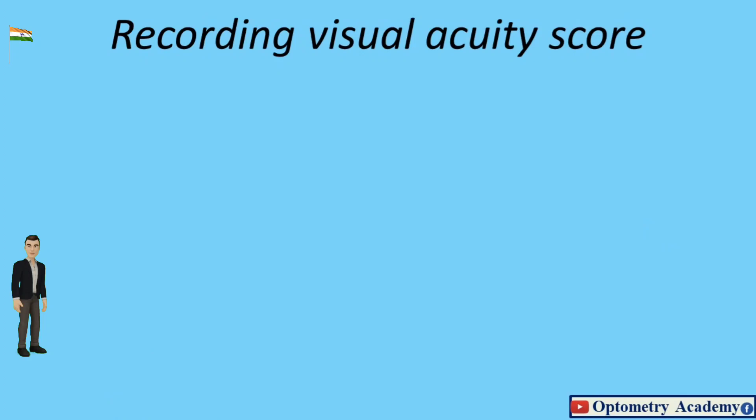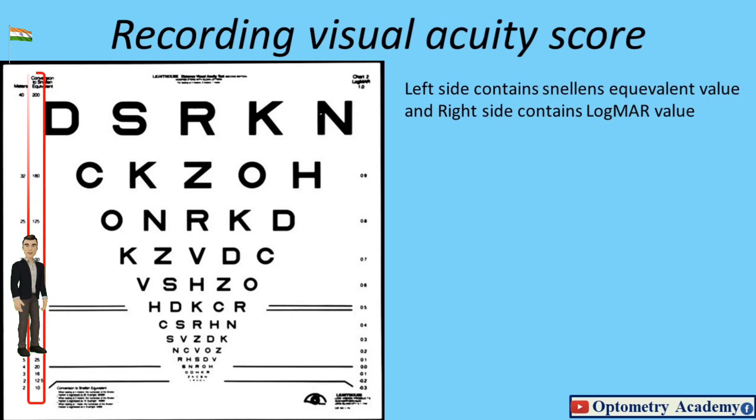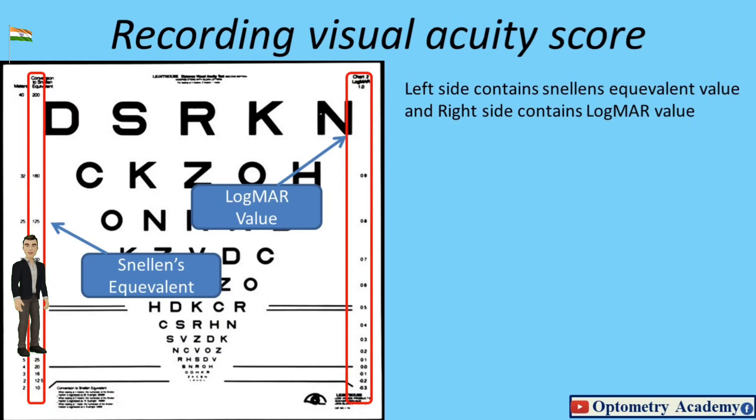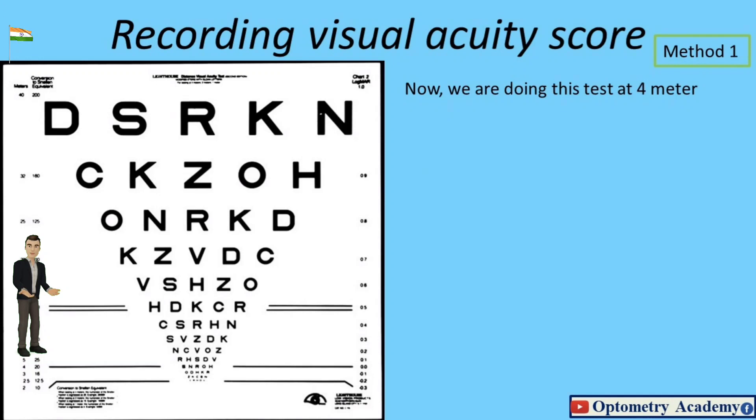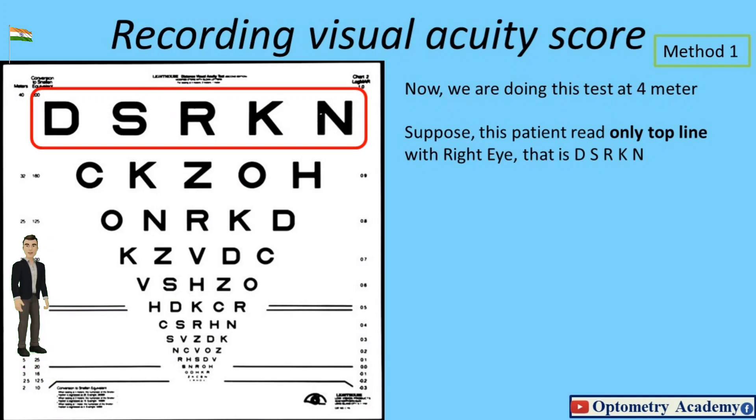Recording visual acuity score: Left side contains Snellen's equivalent value and right side contains LogMAR value. Each letter read correctly equals 0.02 LogMAR score. Method 1: Now we are doing this test at 4 meters. Suppose this patient read only top line with right eye, that is D-S-R-K-N. LogMAR score of this line is 1.0. So final vision of right eye of this patient is 1.0 LogMAR.